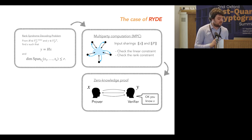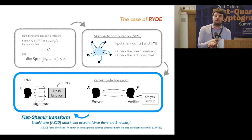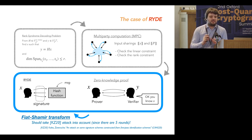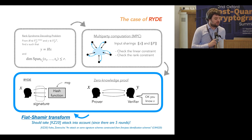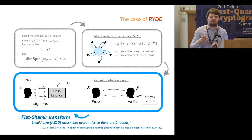Thanks to this last check on the scalar product, we verify the rank constraint. The MPC protocol is complete: we applied the MPC-in-the-Head paradigm to get a zero-knowledge proof-of-knowledge, then applied the Fiat-Shamir transformation to obtain the signature scheme named RIDE. One note: in the Beaver-triple protocol, the prover requires randomness from the verifier, so the zero-knowledge proof ends up being a five-round proof-of-knowledge, not a sigma protocol. We must account for the Kales-Zaverucha attack when selecting the number of repetitions tau.